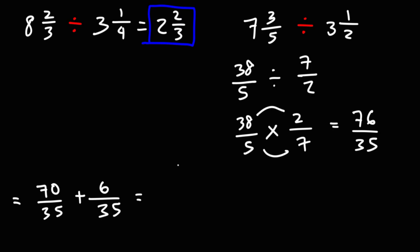35 goes into 70 two times, with the remainder of 6. So 2 plus 6 over 35 is 2 and 6 thirty-fifths. So this is going to be our final answer.